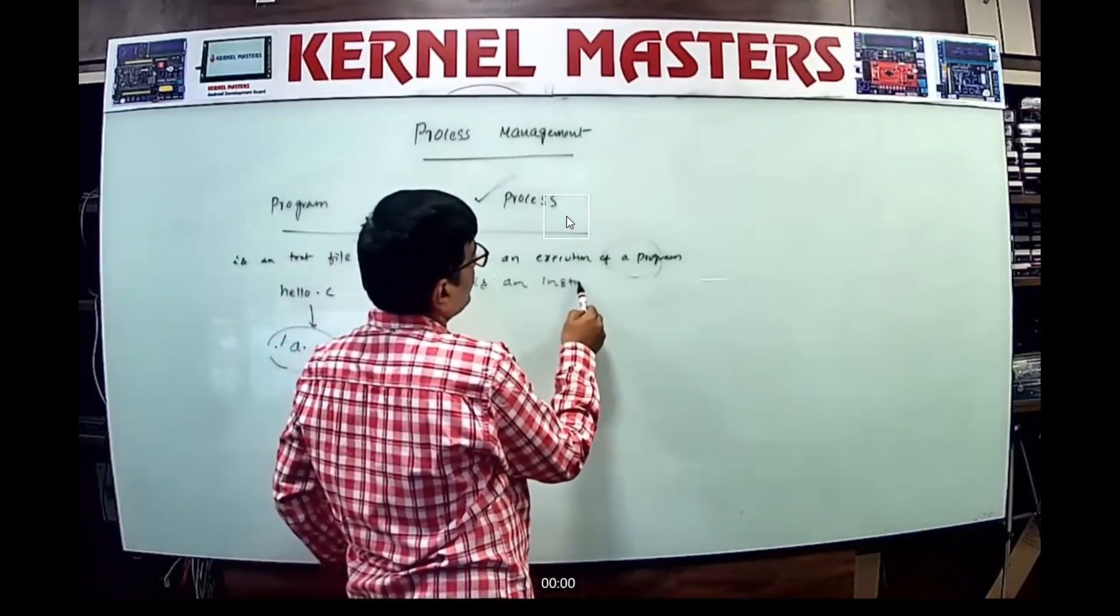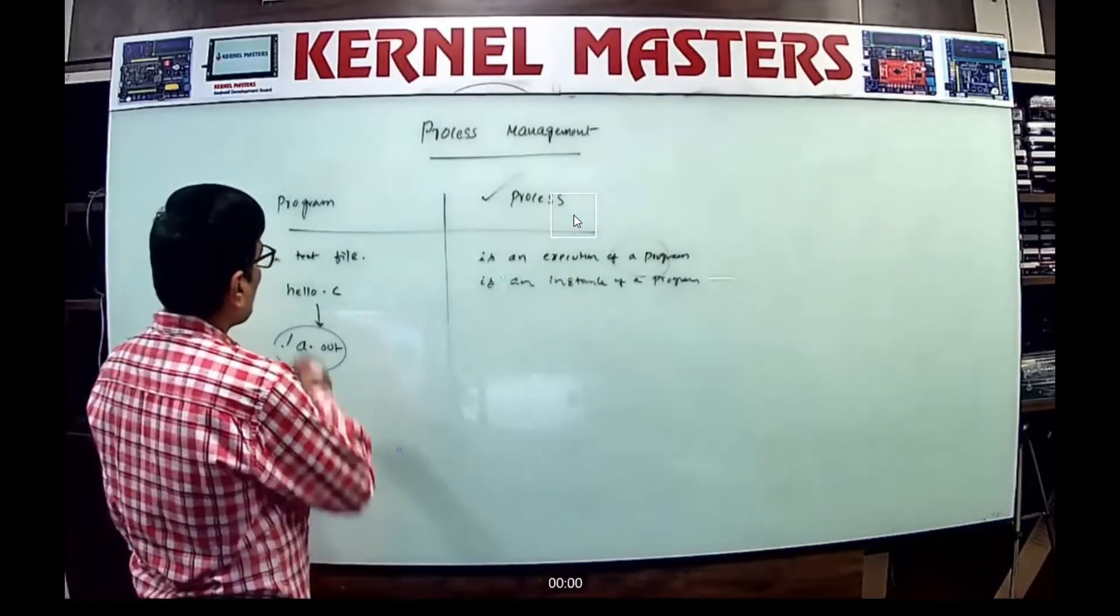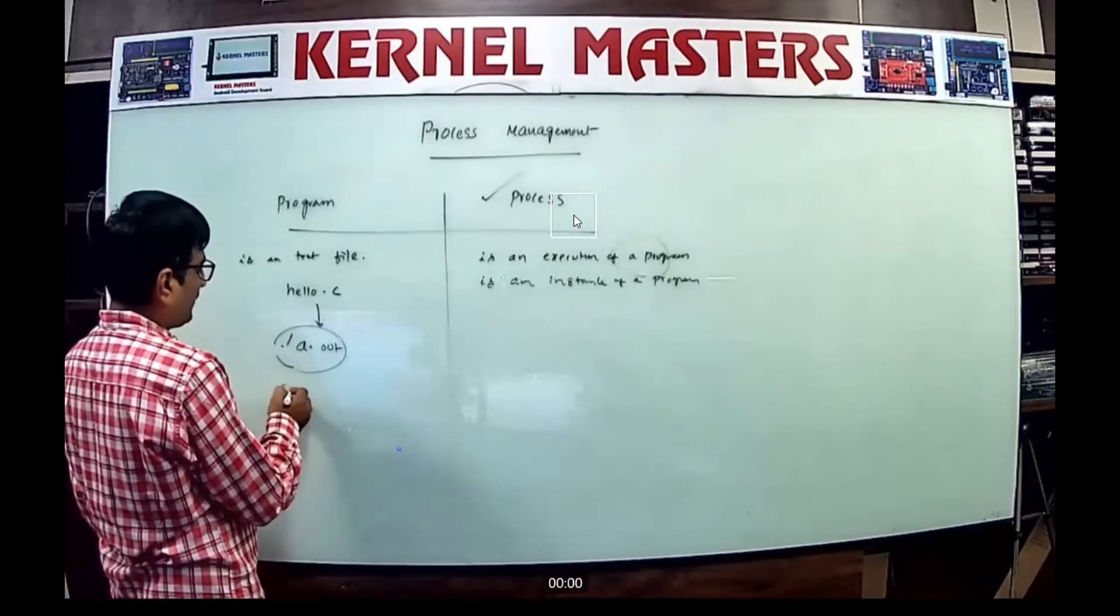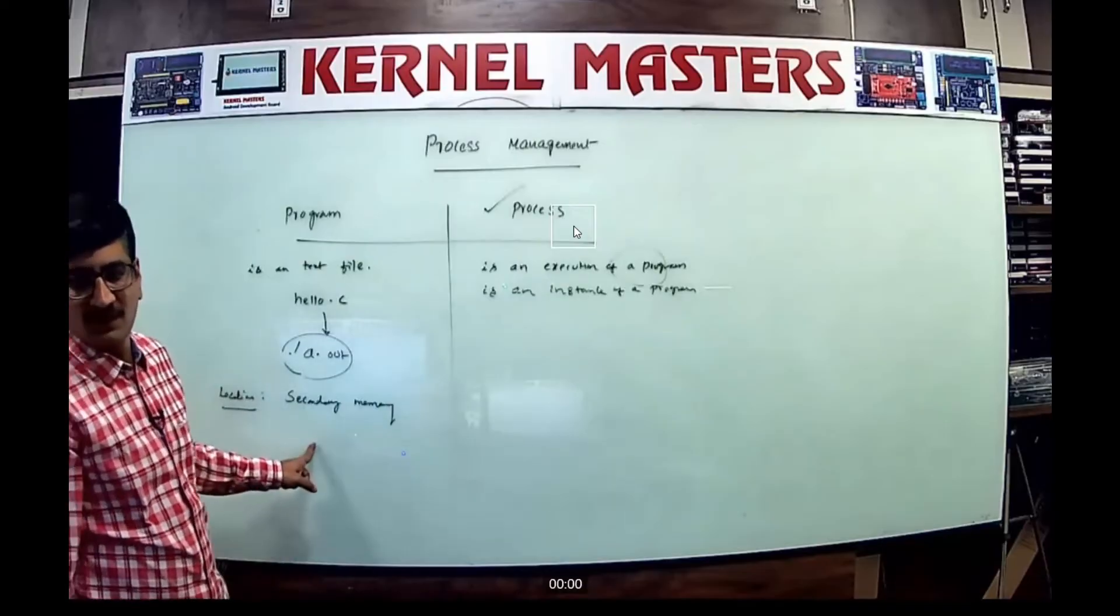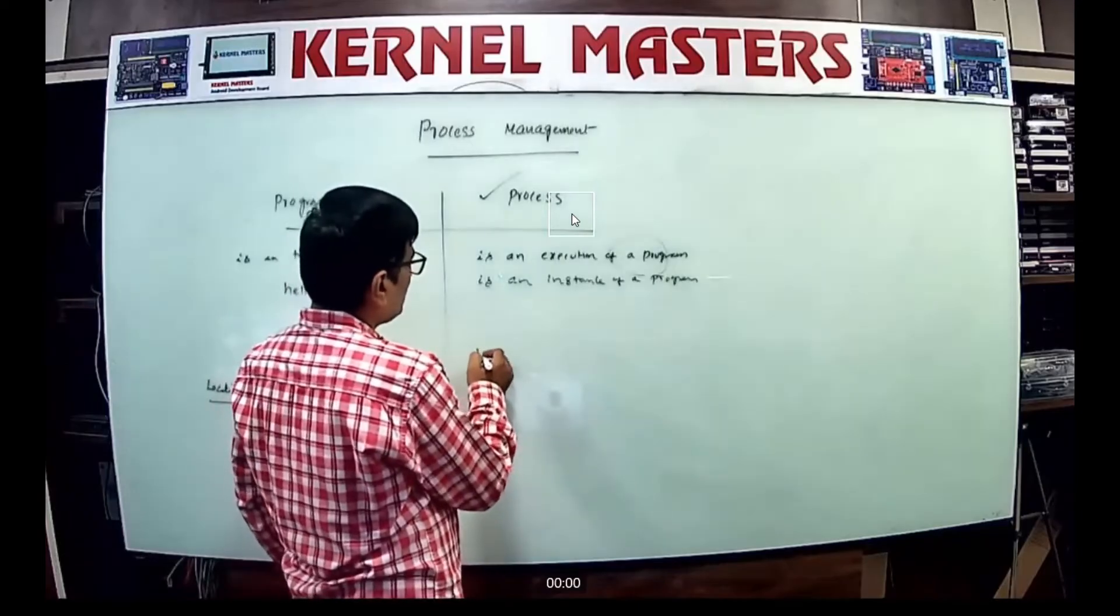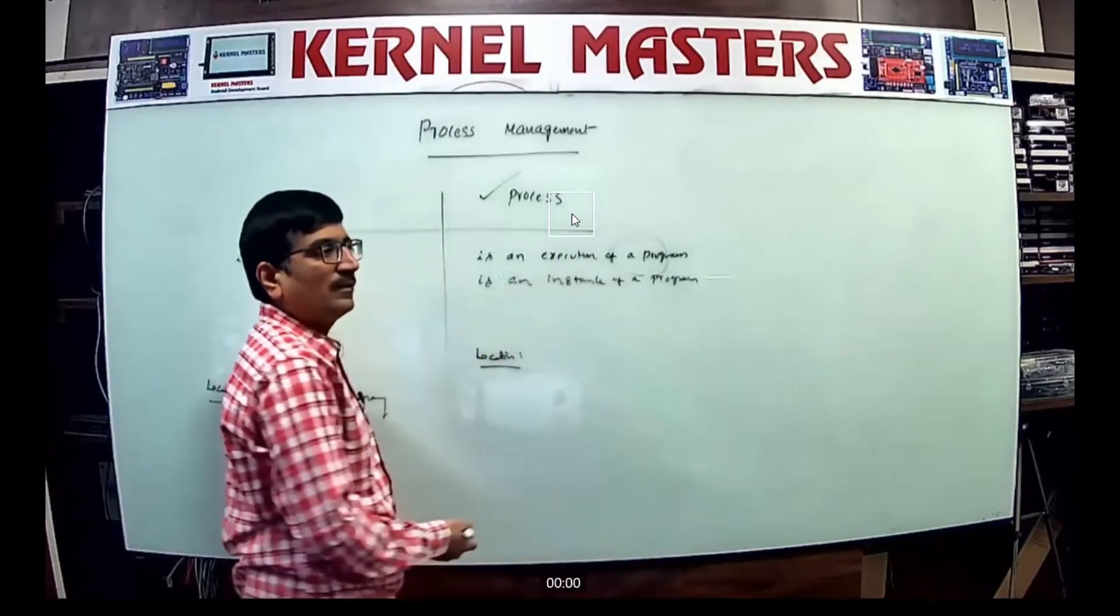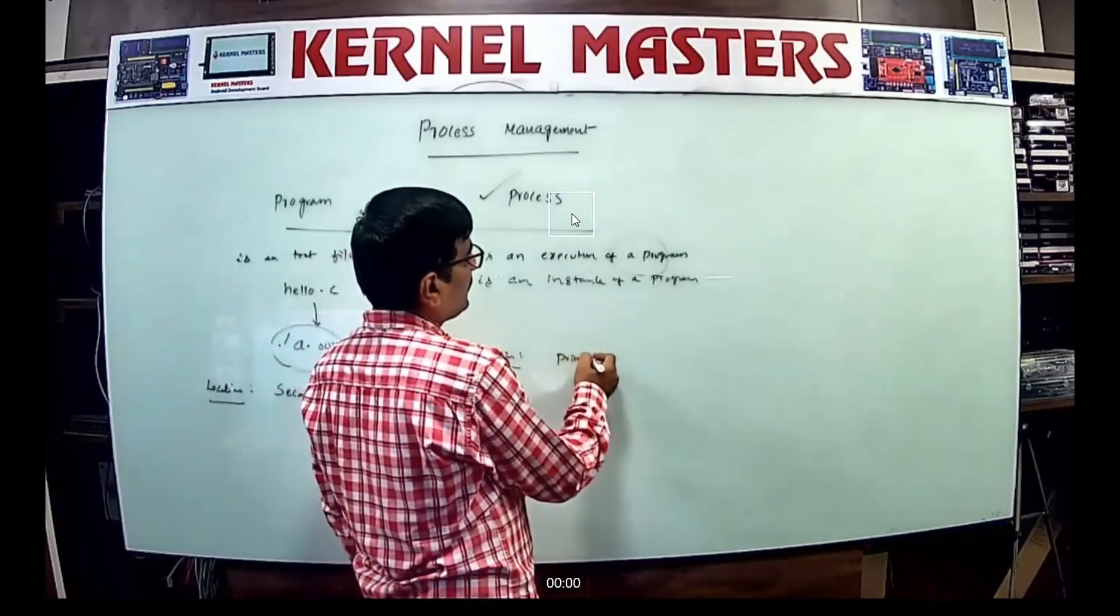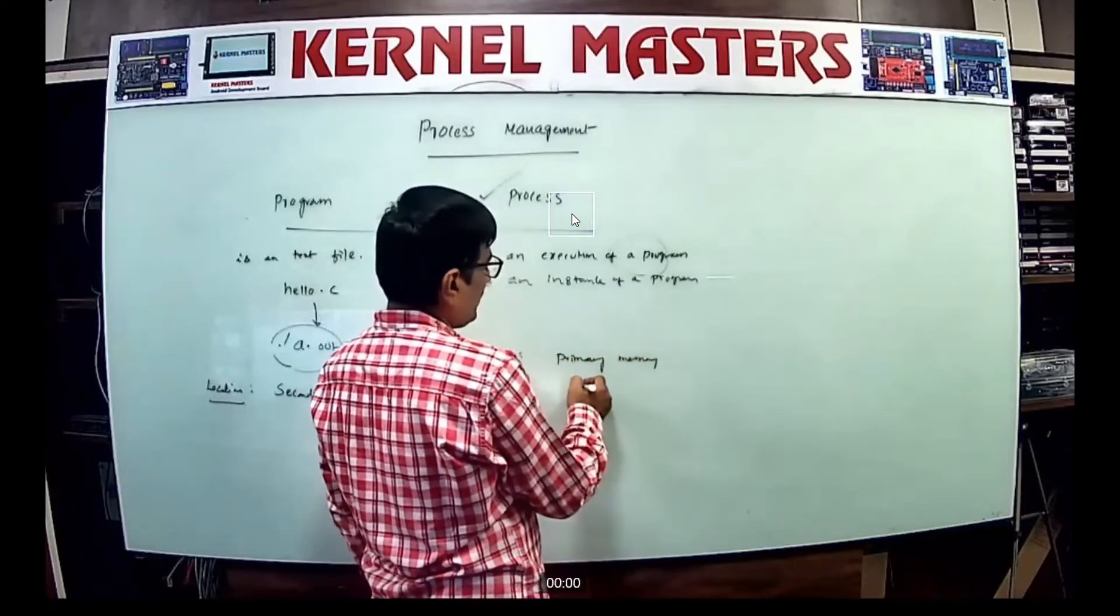Where is the program located? Programs are stored in secondary memory, the storage media. Where is the process? During process execution time, it enters the RAM, which is the primary memory.